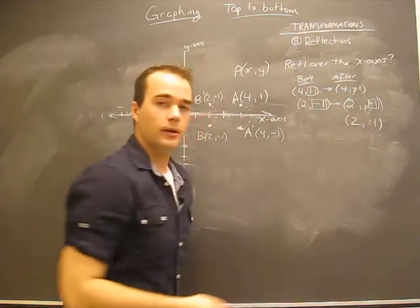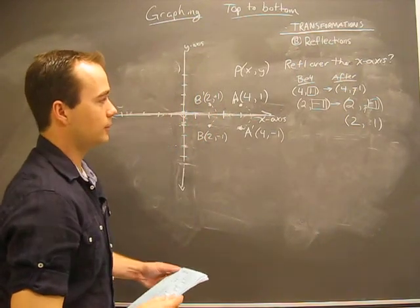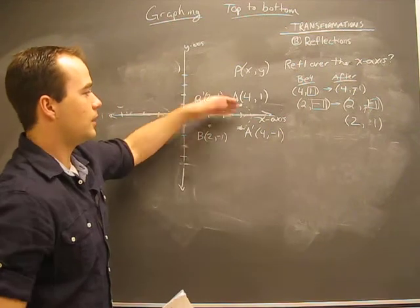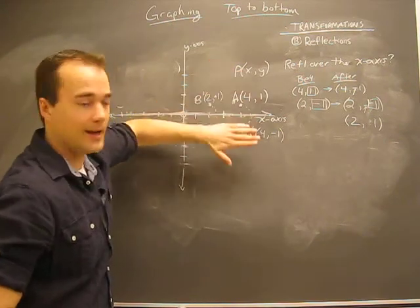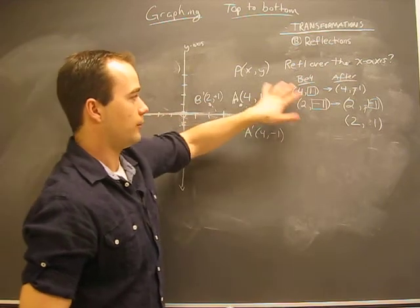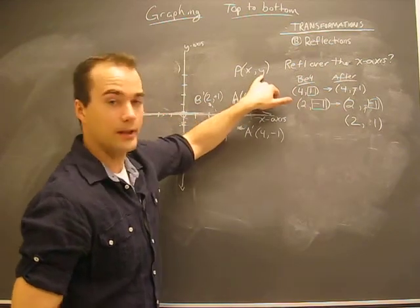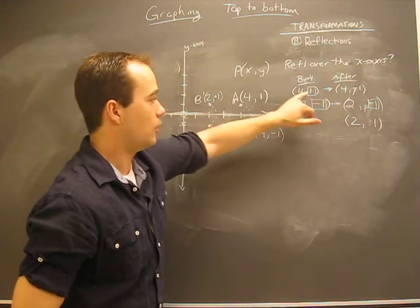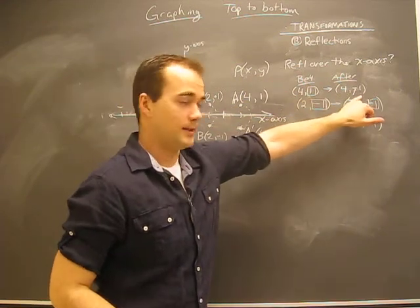And so the common thing we can understand from this is that when we reflect over top of the x-axis, what is happening is that, and what we've shown here is that our y value of our point (x, y) gets negated.